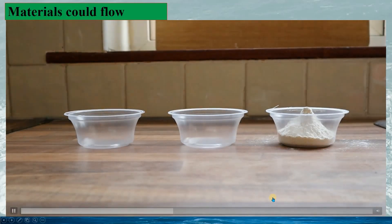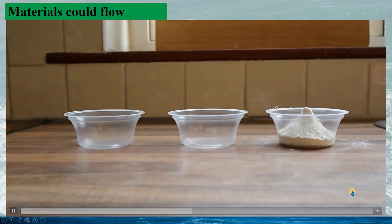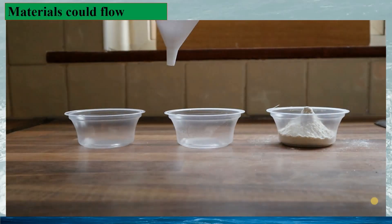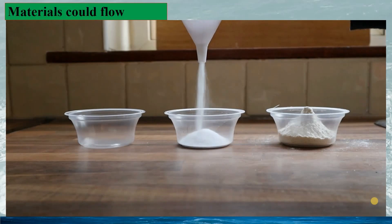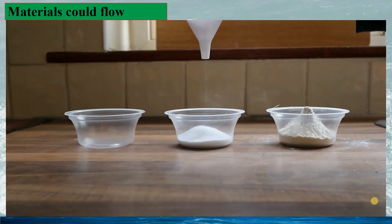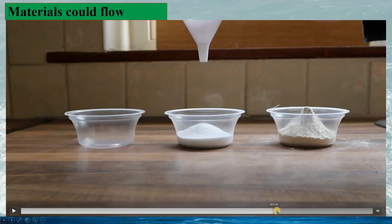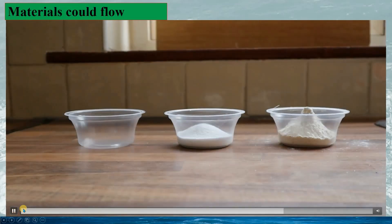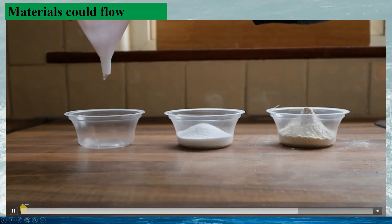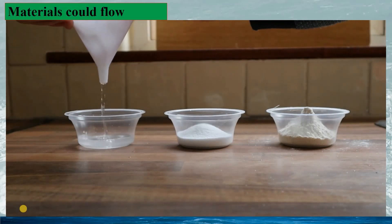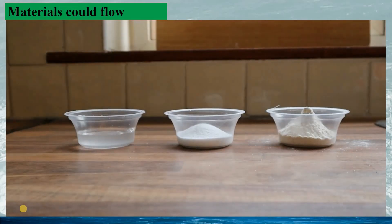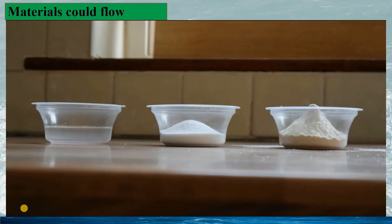The second experiment is the flow of fine salt, and we can see the salt flows through the funnel very smoothly and fast, since salt has a much larger density than flour — 2.16 against 0.593 kg per litre — and the result of the salt flow in the cup is a flat coin shape. The third experiment is water. Obviously, water could flow through the funnel easily as expected; the result of the water flow in the container is a flat surface.